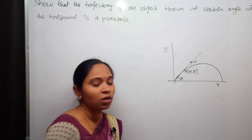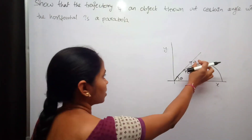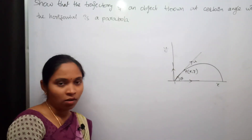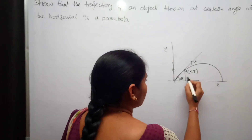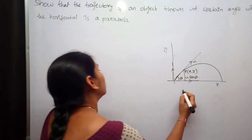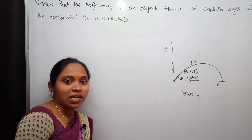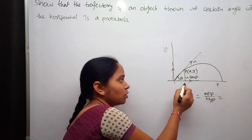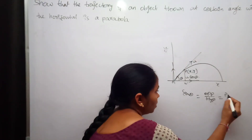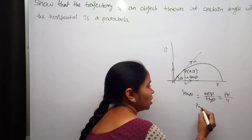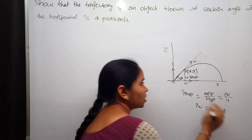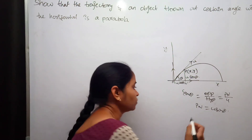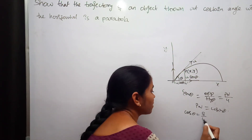You can resolve this velocity vector into two components: one along the x-axis and the other along the y-axis. Opposite to theta we have u sinθ — since sinθ is opposite by hypotenuse, the opposite side PN divided by hypotenuse U gives PN = u sinθ. And we have u cosθ along the base, since cosθ is base by hypotenuse, giving ON = u cosθ.